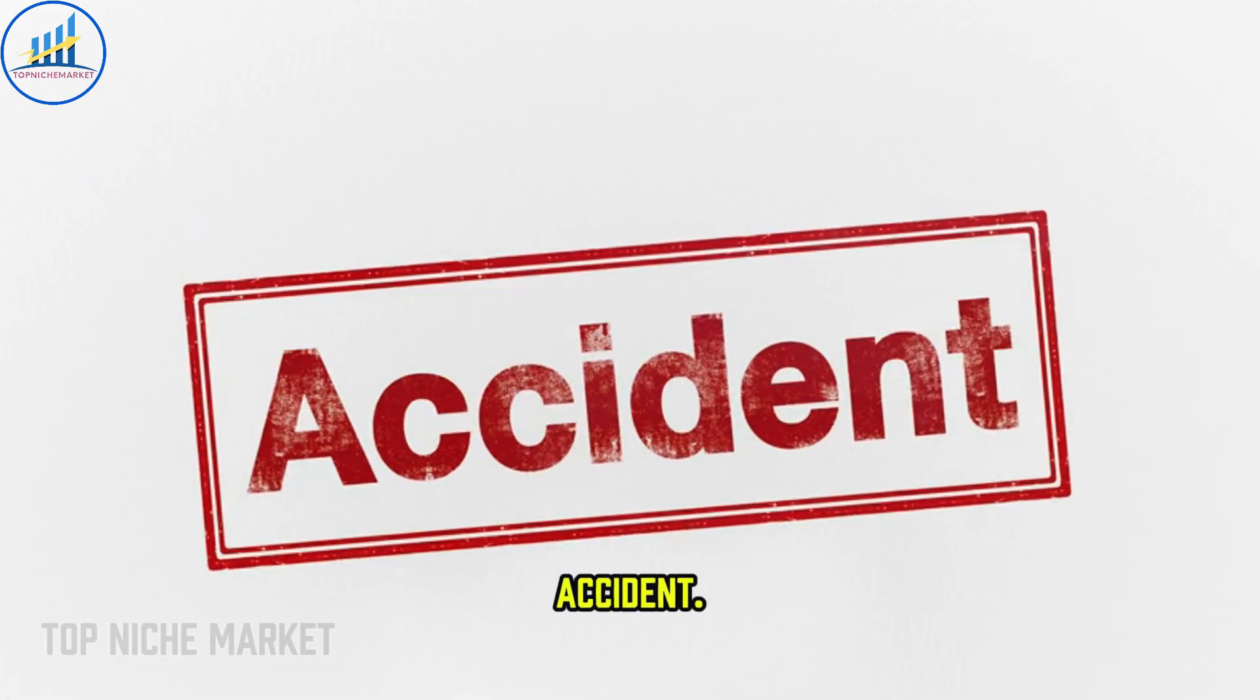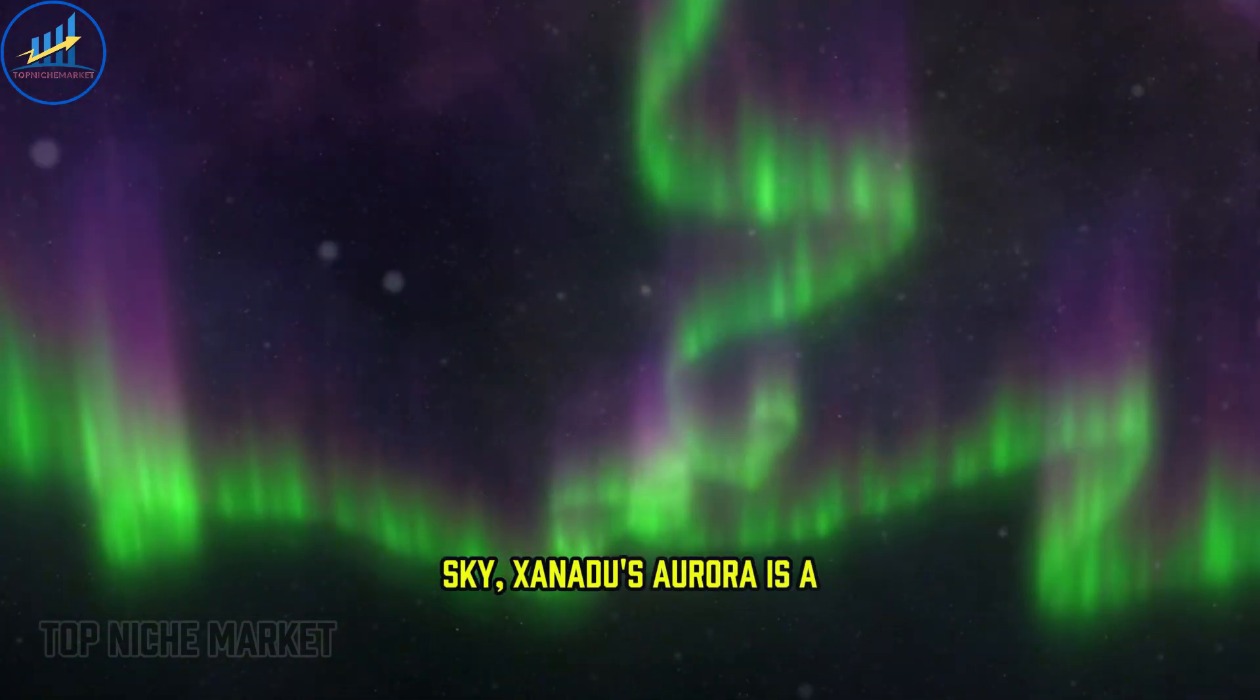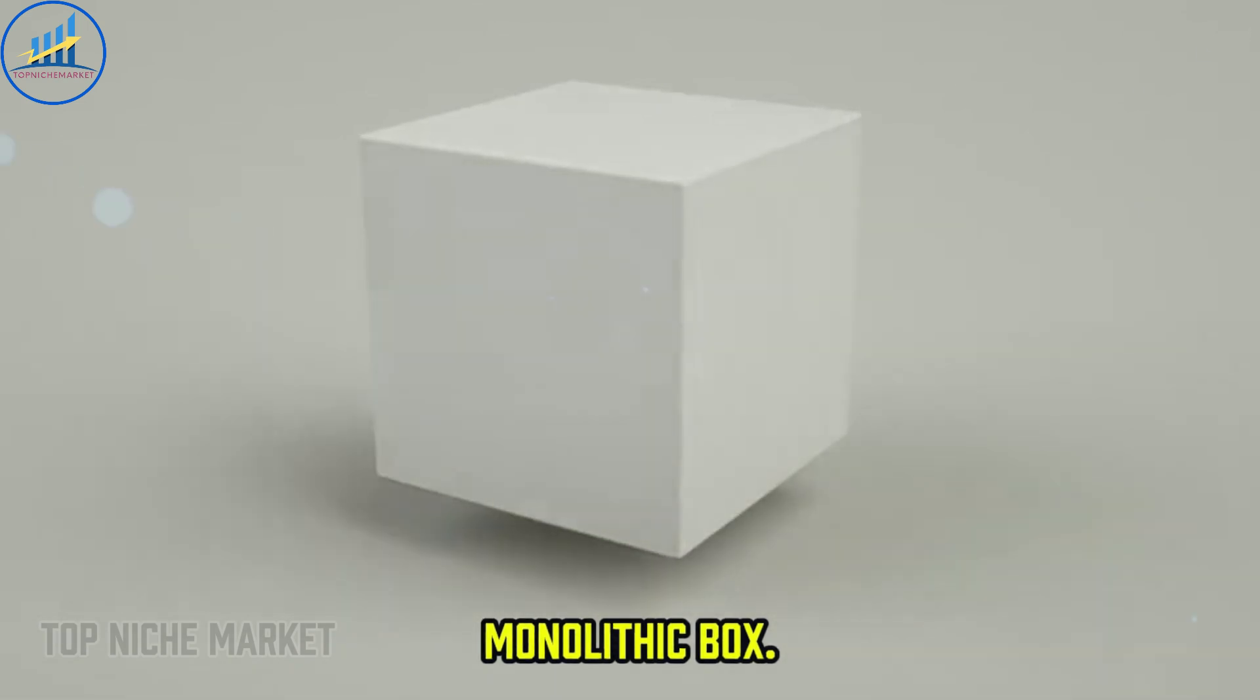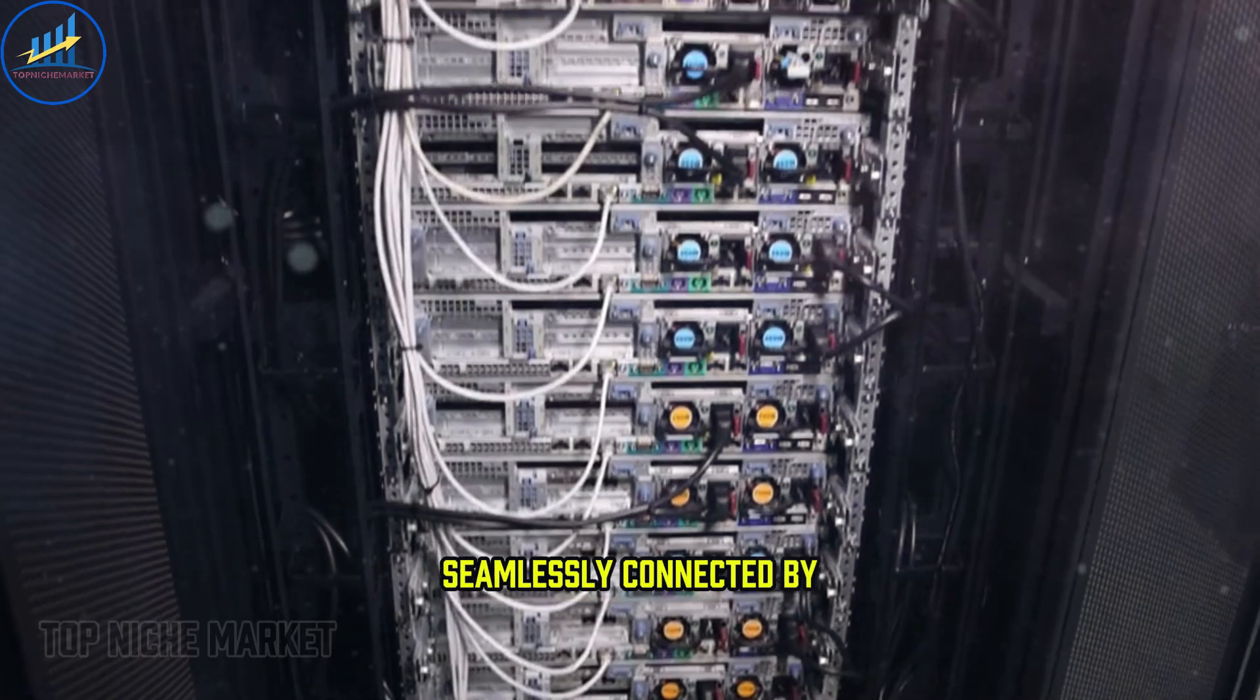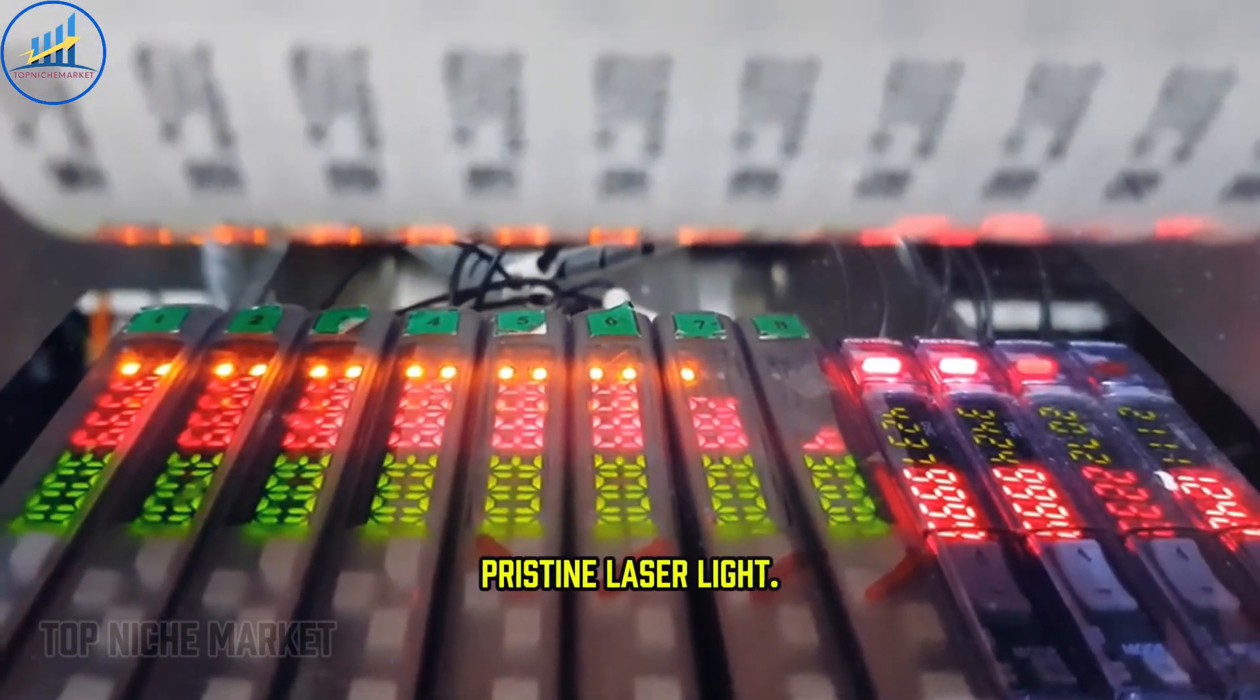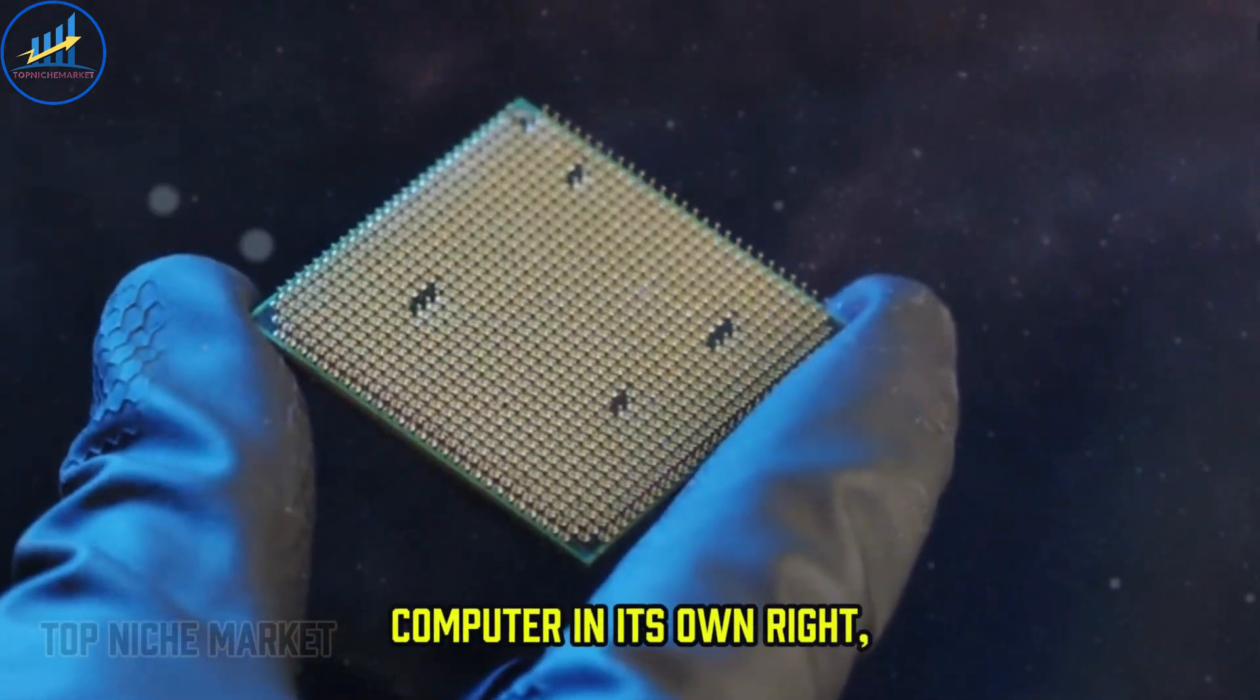The name is no accident. Just as the Aurora Borealis is a breathtaking display of light in the sky, Xanadu's Aurora is a machine that performs its magic with light. It isn't a single, monolithic box. It's a modular system of four server racks, all seamlessly connected by fiber optics. One rack is the master controller, generating the pristine laser light. The other three are the quantum processing units, each a powerful quantum computer in its own right, working in concert.